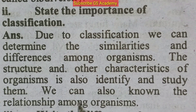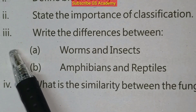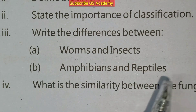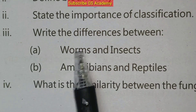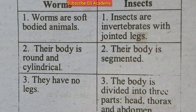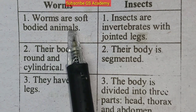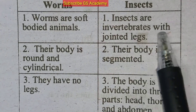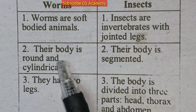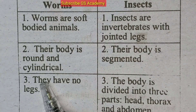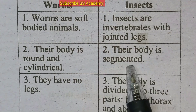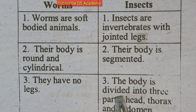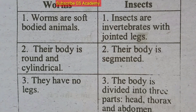The third question asks us to write the differences between worms and insects. Worms are soft-bodied animals, while insects are invertebrates with jointed legs. The body of a worm is round and cylindrical, while an insect's body is segmented. Worms have no legs, whereas the insect body is divided into three parts: head, thorax, and abdomen.